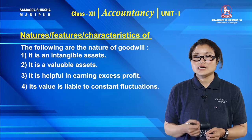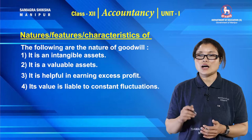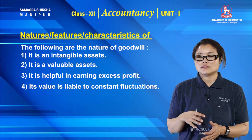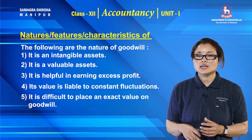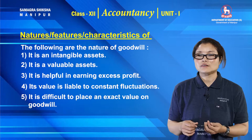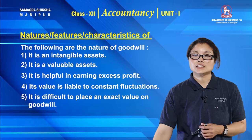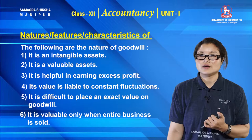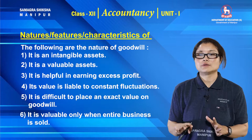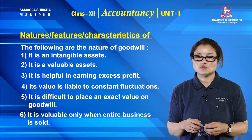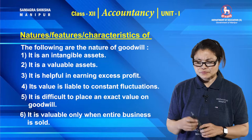Number four: its value is liable to constant fluctuation. Fifth point: it is difficult to place an exact value on goodwill. And it is valuable only when the entire business is sold.